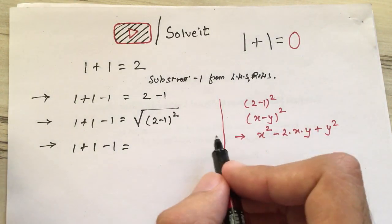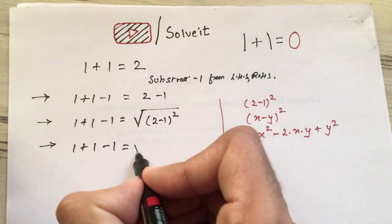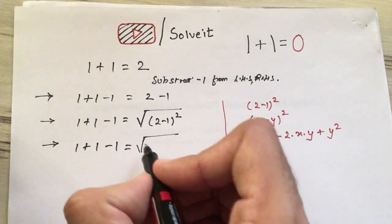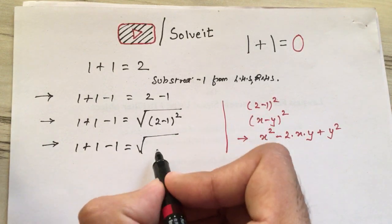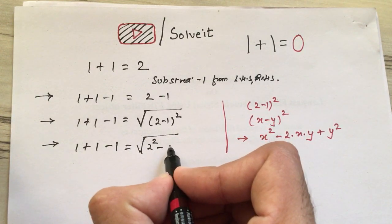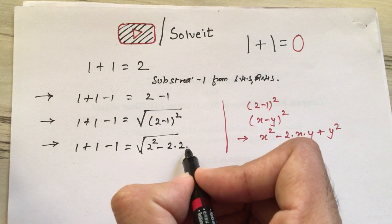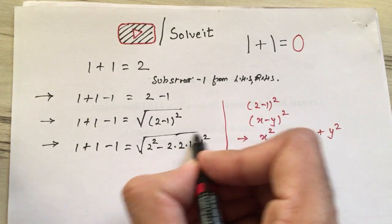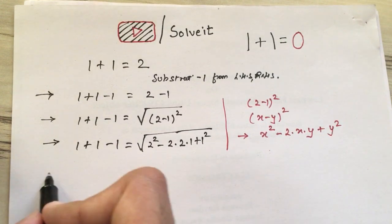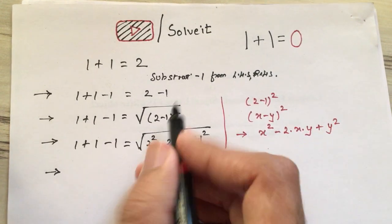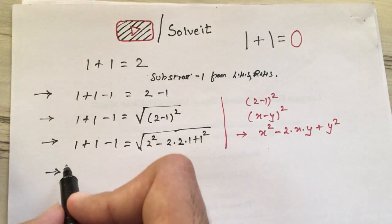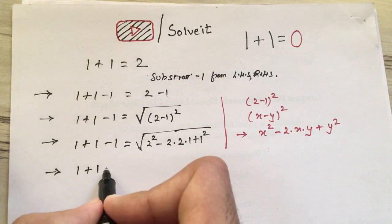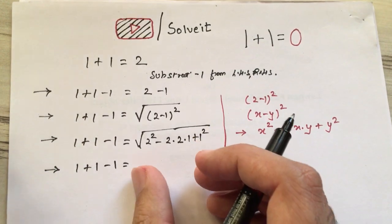Let's apply it here. After applying, we get x=2 and y=1, so 2² minus 2×2×1 plus 1². All good till now; we have just expanded it the same. Let's write 1+1-1. We are operating most of it on the RHS, that is the right-hand side.